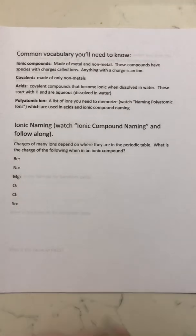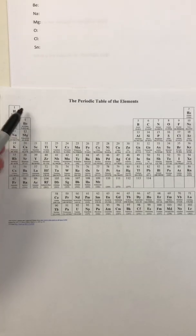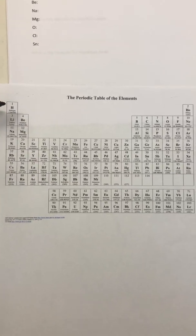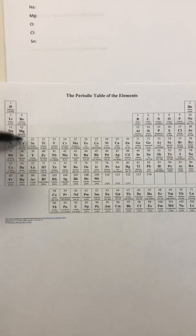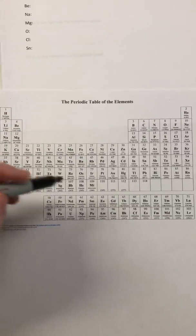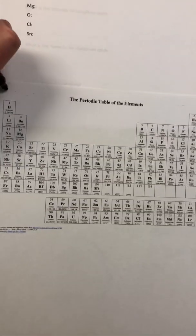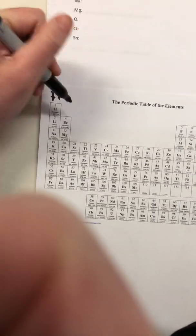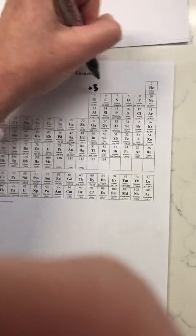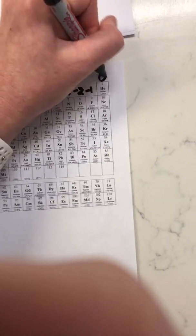We're going to get started with naming and nomenclature. On the periodic table, we're going to break each column down: column one, two, three, four, five, six, seven, and eight. These transition metals won't be included. Anything in the first column has a plus one charge, second column plus two, third plus three, fourth plus or minus four, then minus three, minus two, minus one, and zero.